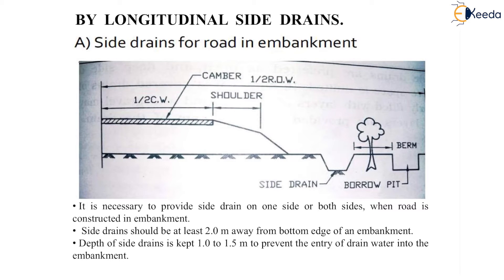Here in this diagram a longitudinal site drain is shown. It is necessary to provide a site drain on one side or both sides when the road is constructed in embankment to drain off the excess water. The site drain should be at least 2 meters away from the bottom edge of an embankment. The depth of the site drain is kept 1 to 1.5 meters to prevent the entry of drain water into the embankment.